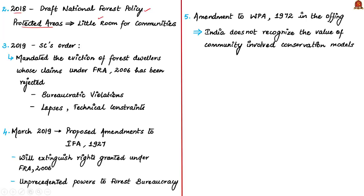Next, the author mentions the recent Supreme Court order in early 2019. The Supreme Court ordered the eviction of forest dwellers whose claims under the Forest Rights Act of 2006 had been rejected. The Supreme Court did not consider bureaucratic violations, lapses, or technical constraints in validating these claims. All these factors led to a huge number of rejections. The order has since been temporarily stayed by the court.